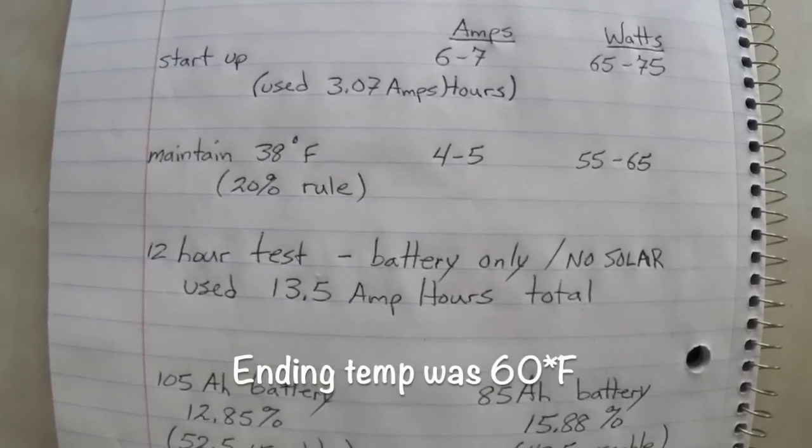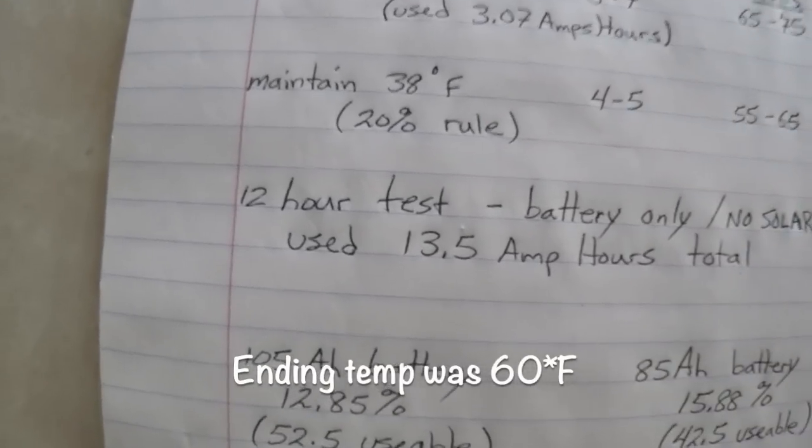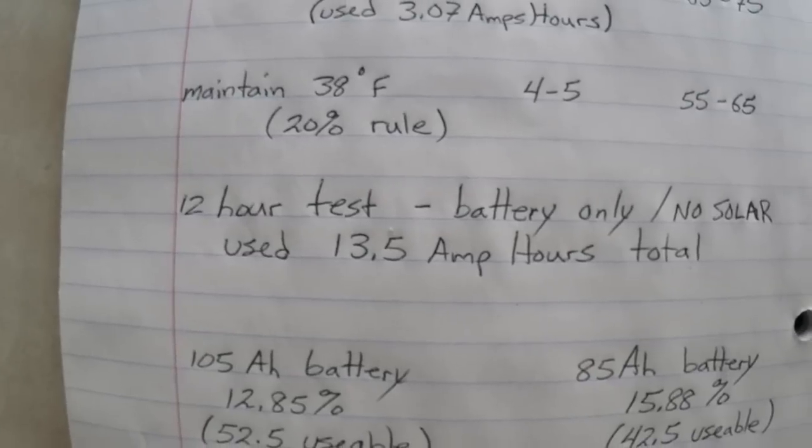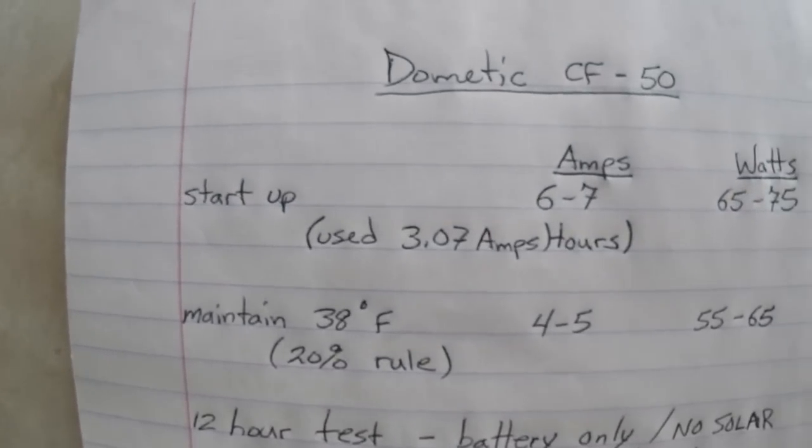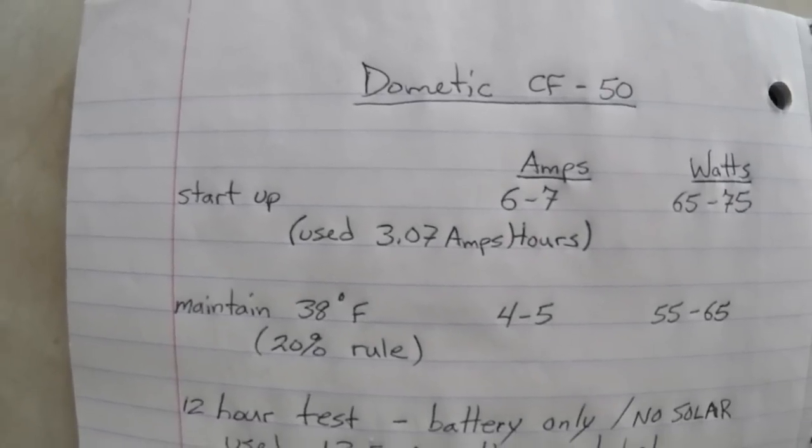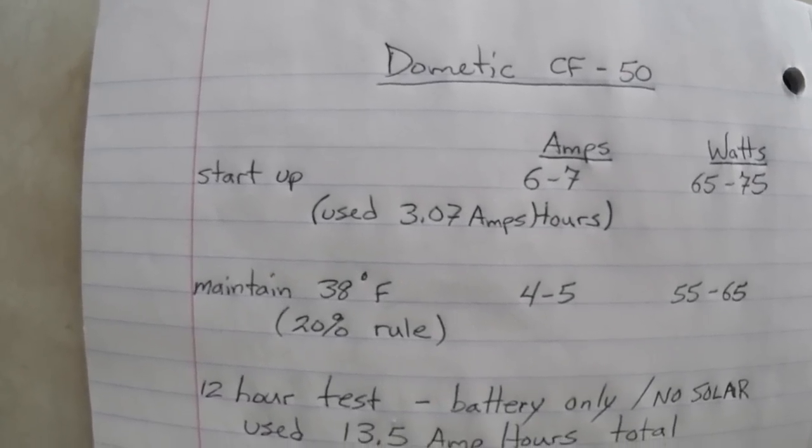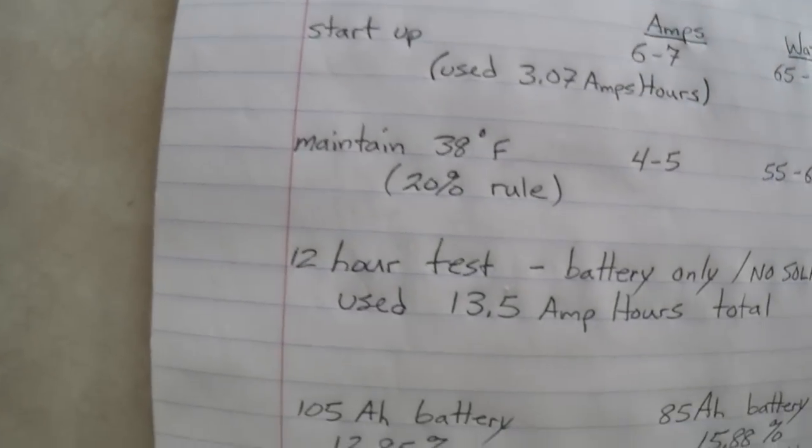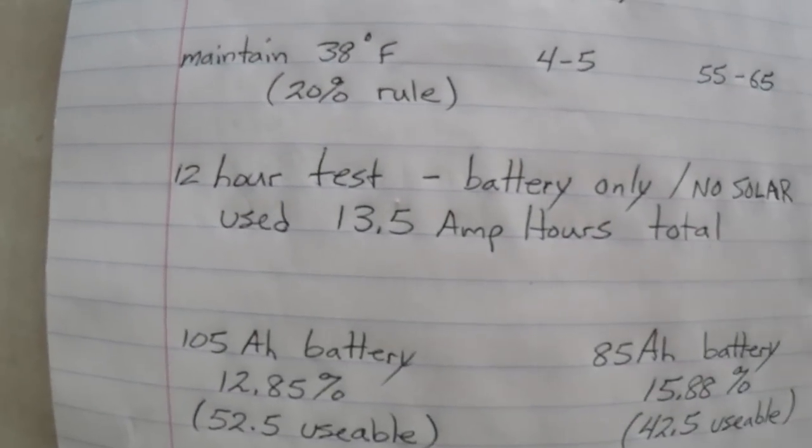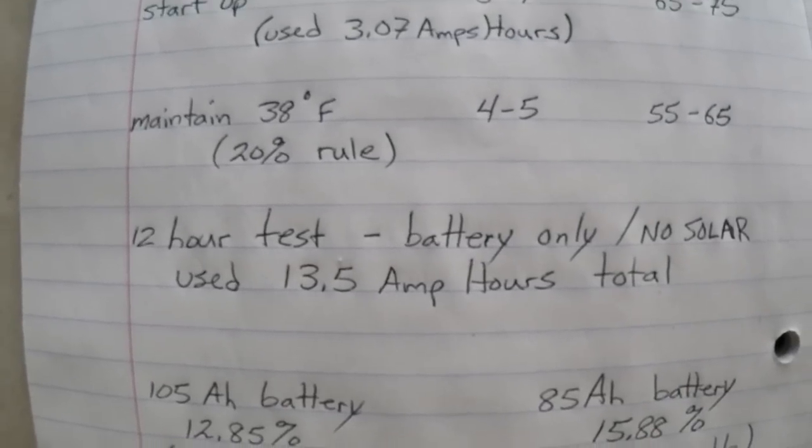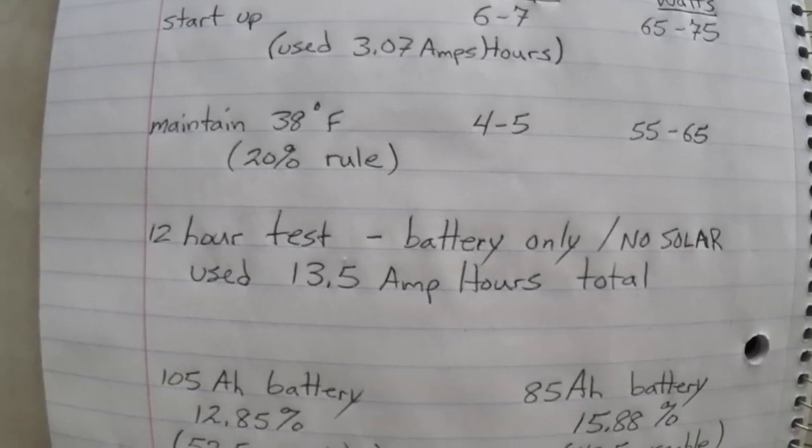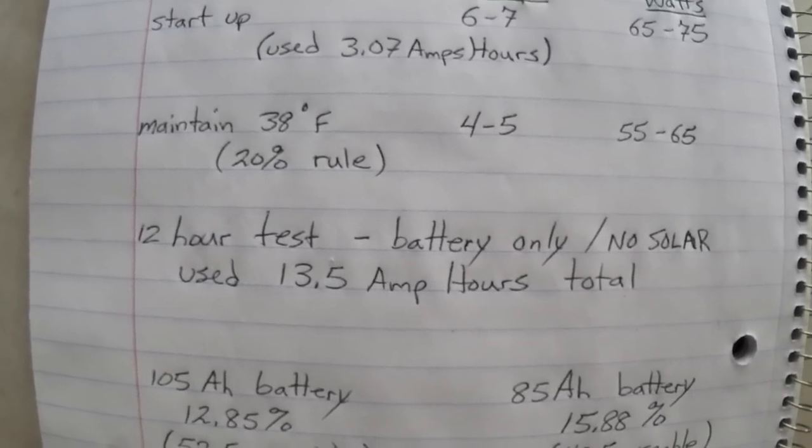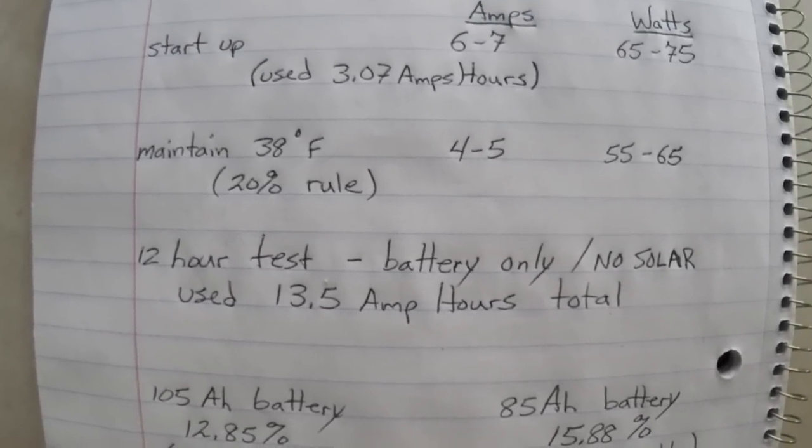Started at 80, ended at 60 degrees. It used 13.5 amp hours. That 13.5 includes the 3.07 amp hours it took to get it cooled down. If it was already cooled down, theoretically it would have used about 10 amp hours for that 12-hour night period, which I was impressed by.